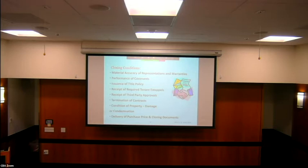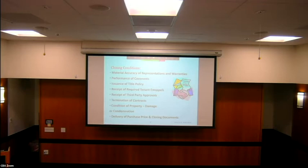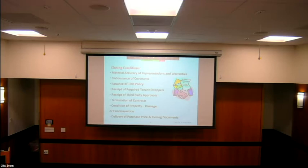The title policy — part of the closing condition is not only looking at what's on title but getting an insurance policy so that if there's an issue down the line, you have an insurance policy to back you up. Tenant estoppels — you want to receive all the tenant estoppels negotiated during due diligence. Third-party approvals — sometimes you'll need a third party to grant an easement to develop the property in a certain way, negotiated in the PSA stage. Termination of contracts — any contracts you ask the seller to terminate, you want to confirm they're terminated, or you can walk away.